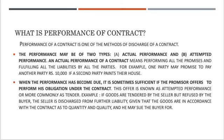When the performance has become due, it is sometimes sufficient if the promisor offers to perform his obligation under the contract. This offer is known as attempted performance, or most commonly a tender. For example, if goods are tendered by the seller but refused by the buyer, the seller is discharged from further liability, given that the goods are in accordance with the contract as to quantity and quality, and he may sue the buyer for it.